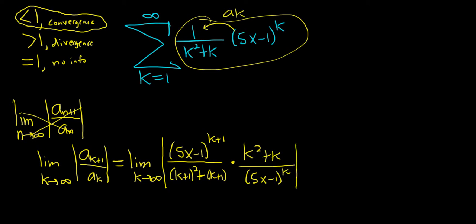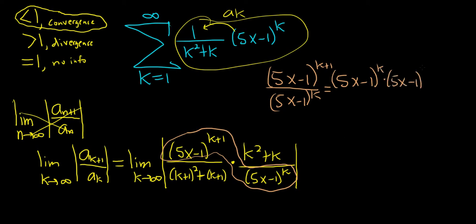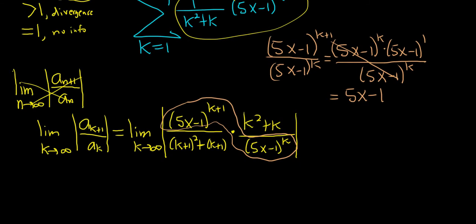Some simplification should occur here. Let's focus on the 5x minus 1's. We have 5x minus 1 to the k plus 1 up top, and on the bottom we have 5x minus 1 to the k. We can break up the numerator as 5x minus 1 to the k times 5x minus 1 to the 1, all divided by 5x minus 1 to the k. These cancel, so you just get 5x minus 1.